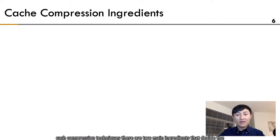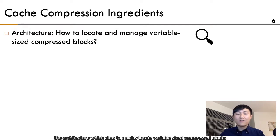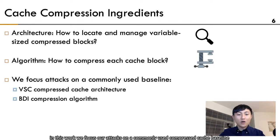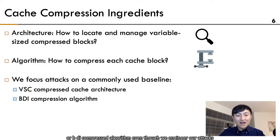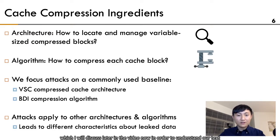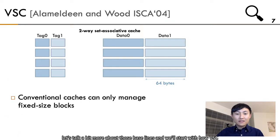In the center of cache compression techniques, there are two main ingredients that decide the effectiveness of a compressed cache. First, the architecture, which aims to quickly locate variable-sized compressed blocks while keeping them compact. Second, the algorithm, whose target is to compress each cache block as much as possible with tolerable decompression latency. In this work, we focus our attacks on a commonly used compressed cache baseline: Variable-Sized Cache, or VSC, compressed cache architecture, and Base-Delta-Immediate, or BDI, compression algorithm. Even though we engineer our attacks assuming these baselines, our attacks can be applied to other architectures and algorithms.